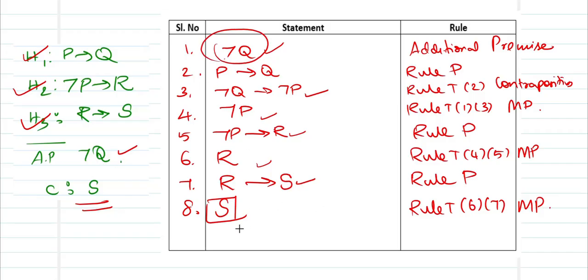Step 7: introduce H3, which is R → S — rule P. Step 8: from R (step 6) and R → S (step 7), derive S — rule T, steps 6 and 7, modus ponens. We have arrived at the conclusion S, starting from the if-part ¬Q. This shows that rule CP can be easily used to solve a conclusion that is a conditional statement. I hope this video helped you understand conditional proof and how to apply it to theory of inferences problems. Happy learning, keep learning, thank you very much.